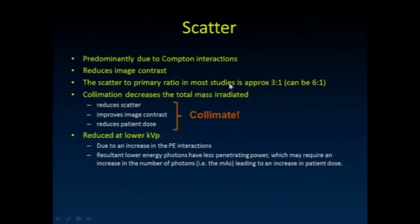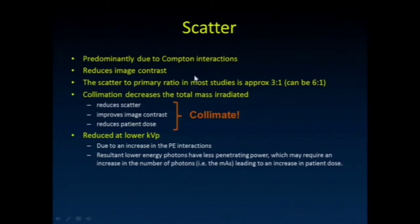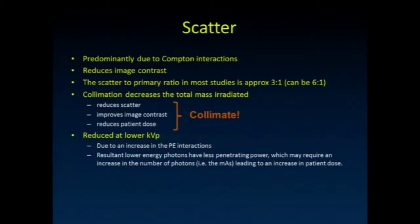I next want to talk a little bit about scatter. We've talked about this really being due predominantly to those Compton interactions. There's a little bit of classic or Rayleigh or coherent scatter as well. This reduces our image contrast. And in a lot of imaging that we do — chest radiograph, pelvic radiograph — the scatter to primary ratio, the number of detected X-rays that were scattered versus ones that were unscattered, can be three to one. Three times as many scattered as opposed to unscattered, or even six to one in lateral abdominal or lateral lumbar spine imaging.